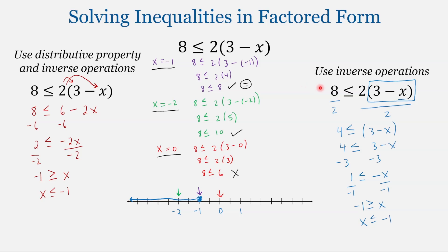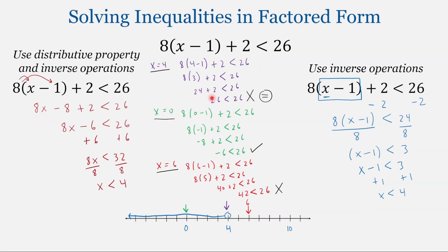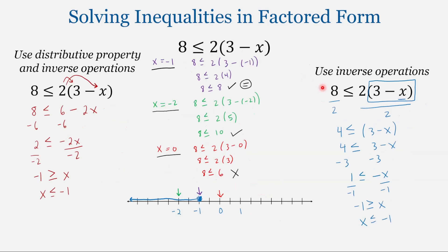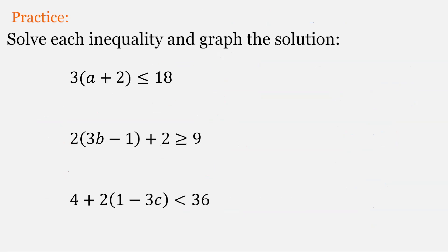When solving the second inequality, I would probably choose the second method using inverse operations, because I notice 8 is divisible by 2, which quickly simplifies the inequality. But there is not much advantage using one method over the other for this problem. I will typically use the distributive property to simplify first, unless I see an advantage to going straight to solving. A great way to learn is to practice on your own — go ahead and pause and do these three problems.